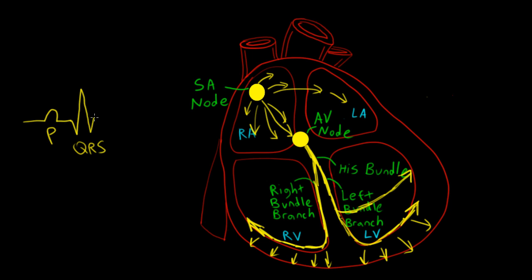Following ventricular depolarization, we get repolarization, which is reflected in our T wave.